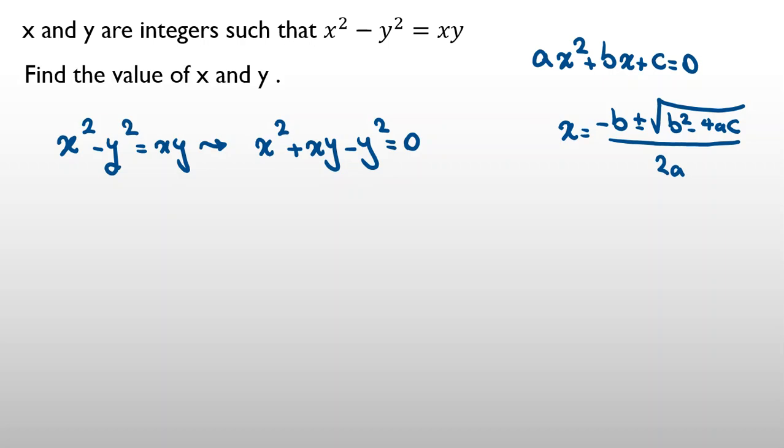Now I want to read for the equation that we have here. So, I say in this case a equals one, coefficient of x squared, b is y, and c equals negative y squared.